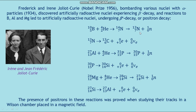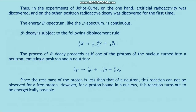The specific reactions observed were: boron → nitrogen, nitrogen → carbon; aluminium → phosphorus, phosphorus → silicon; magnesium → silicon, silicon → aluminium. The presence of positrons in these reactions was confirmed by studying their tracks in a Wilson chamber placed in a magnetic field. Thus, in the experiments of Joliot-Curie, artificial radioactivity was discovered, and positron radioactivity (beta-plus decay) was observed for the first time.